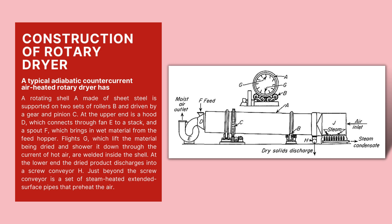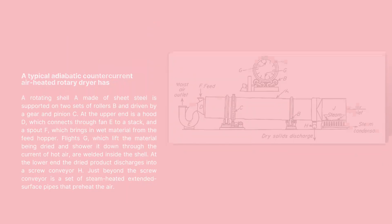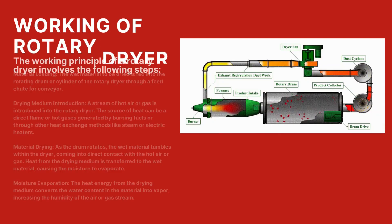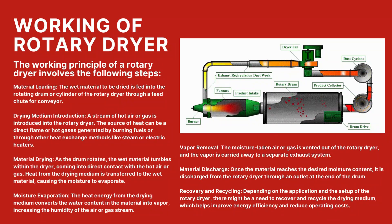The dried product is discharged into the screw conveyor denoted by H at the lower side of the dryer. There are steam-heated extended surface pipes kept beyond the screw conveyor to preheat the air. This was an overall construction of the rotary dryer.